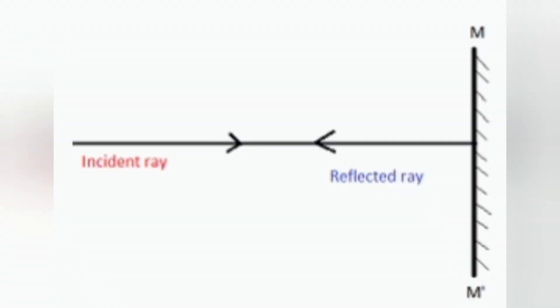Now, let us learn about the reflection of a ray of light normally incident on a plane mirror. Consider a ray of light normally incident on a plane mirror at the point of incidence O. Since the angle of incidence is measured with the normal to the mirror and not with the surface of the mirror, the angle of incidence for this ray will be equal to 0 degree.